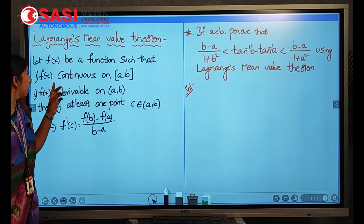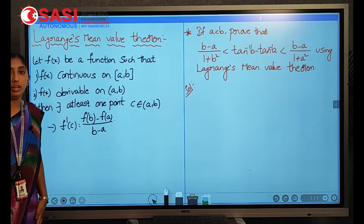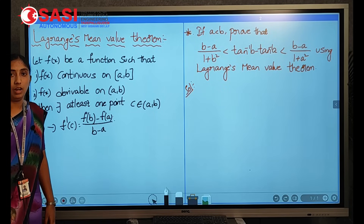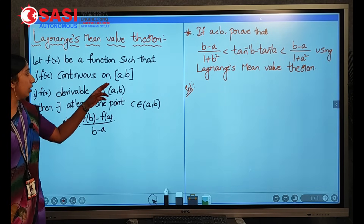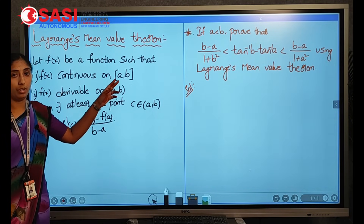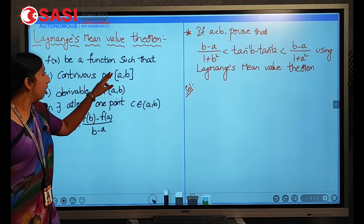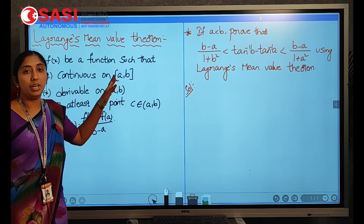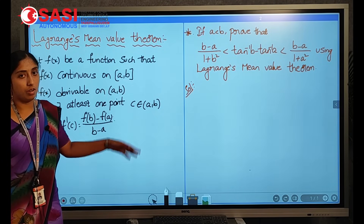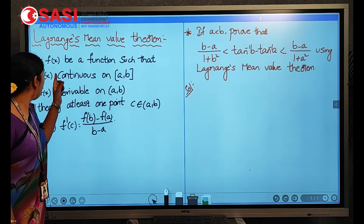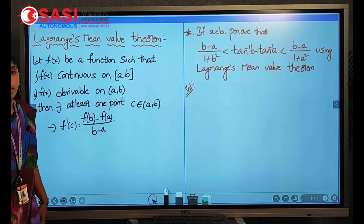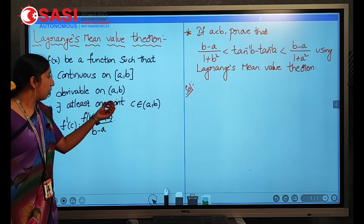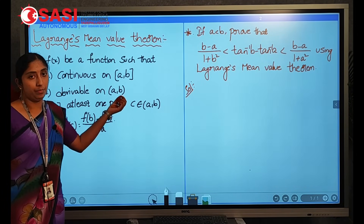For this, you have to consider a function f of x. This f of x should be continuous — that is, continuous on the closed interval [a, b], which includes a and b and all values in between. At the same time, f of x is also derivable on the open interval (a, b), which excludes the values of a and b.